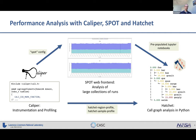Caliper fits into a software ecosystem together with Spot and Hatchet. Caliper is the instrumentation and profiling component. It can record data for Spot, our visualization tool for analyzing huge amounts of runs, and from Spot you can export data into Hatchet. Caliper can also record data for Hatchet directly.